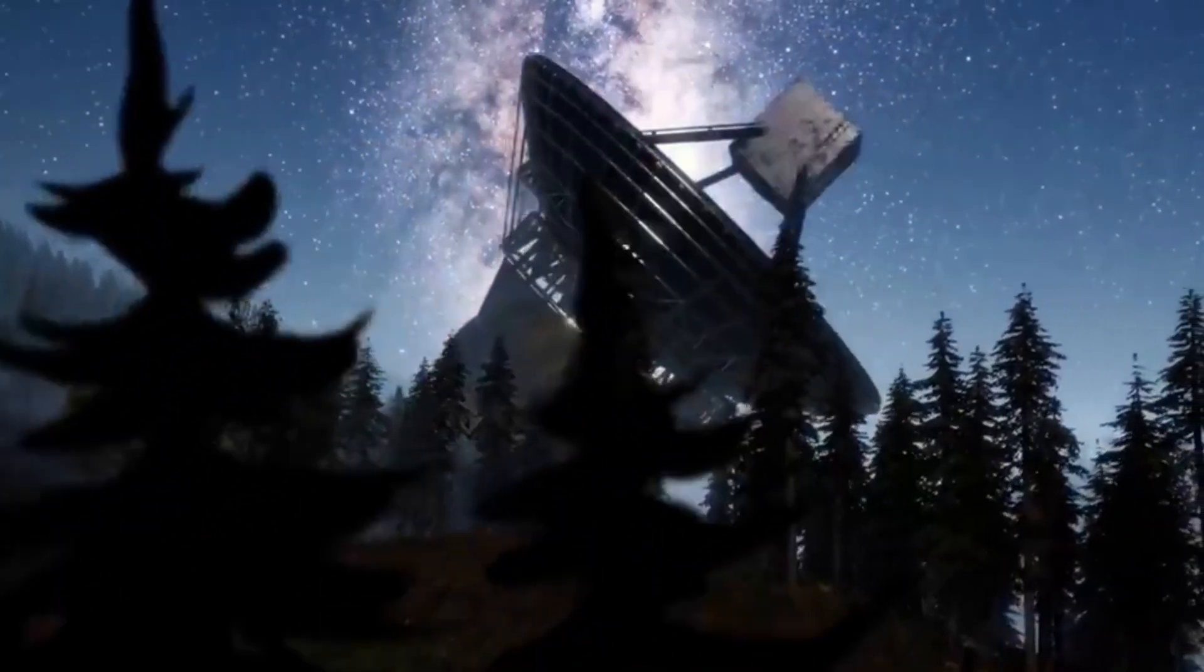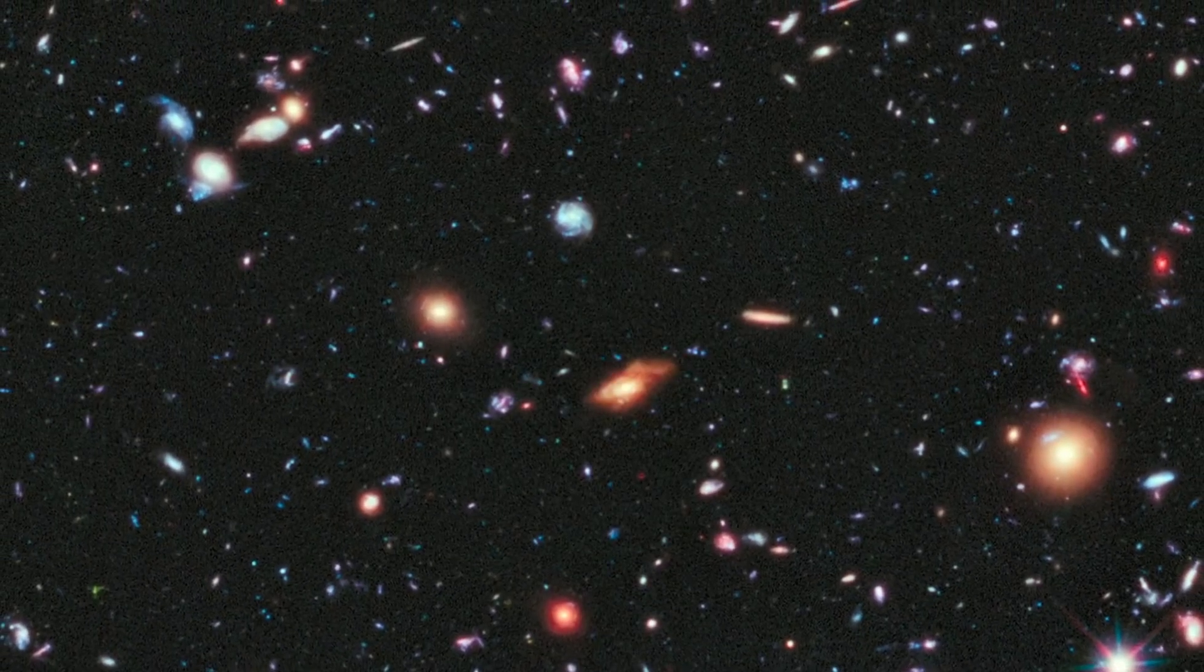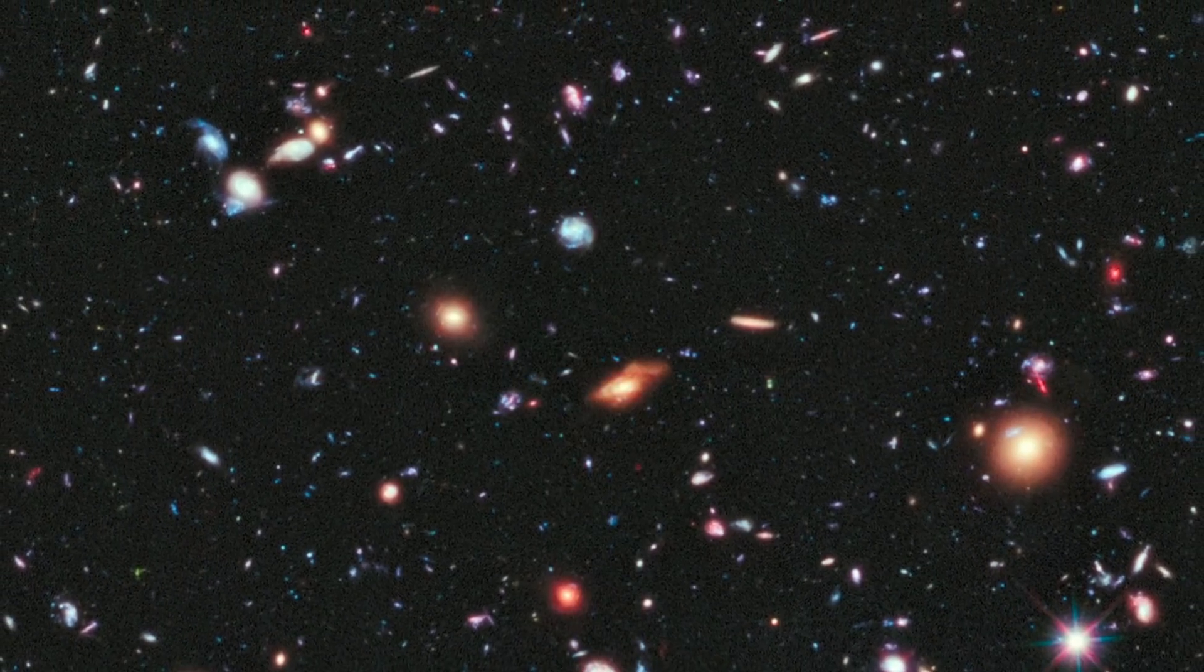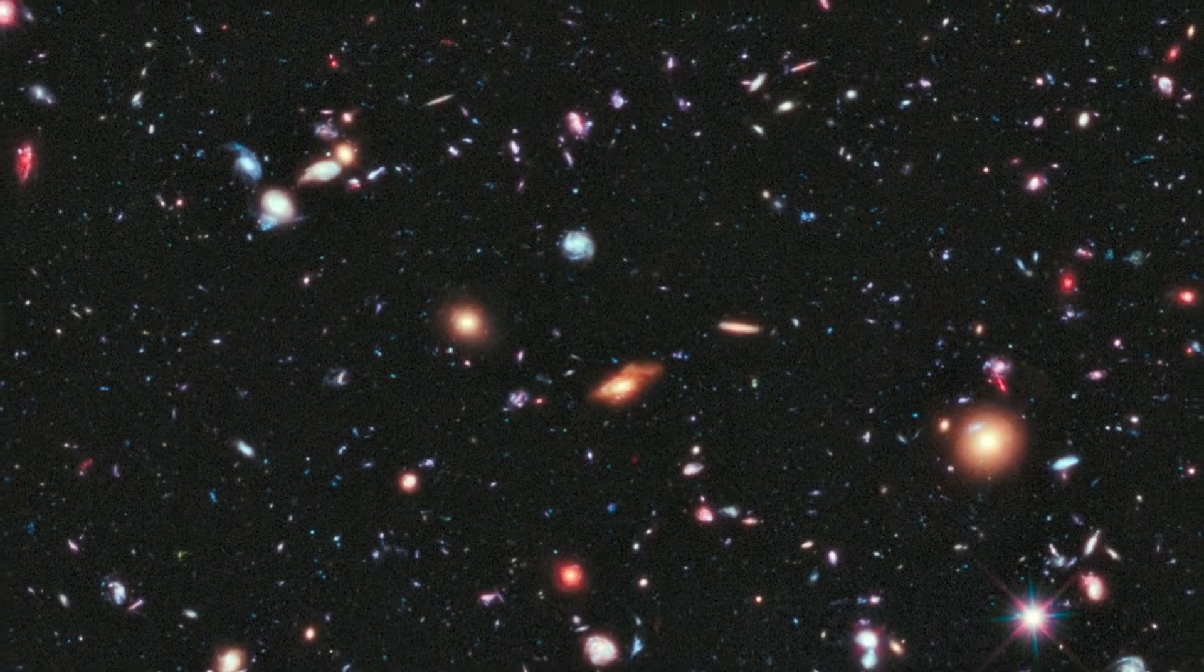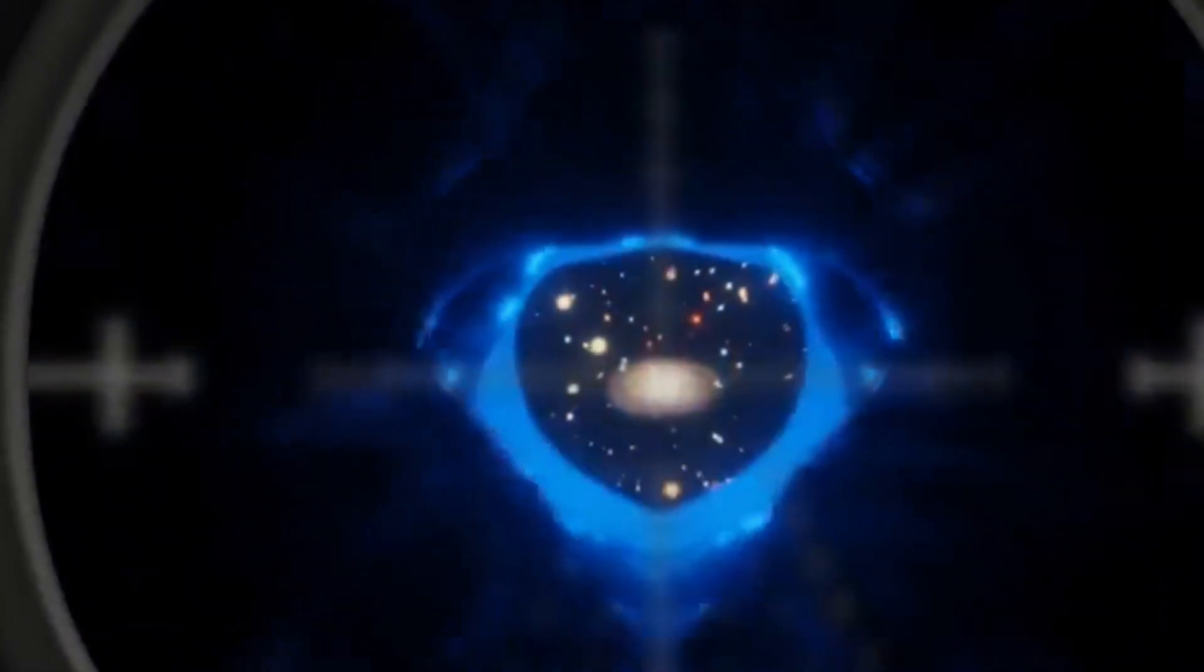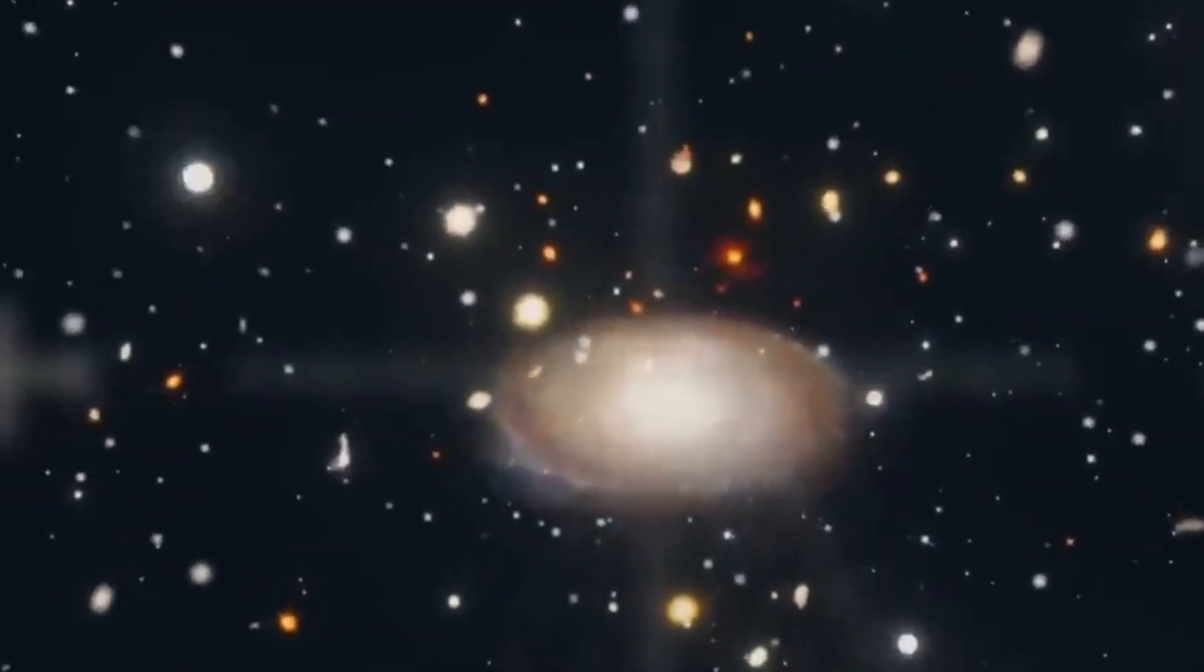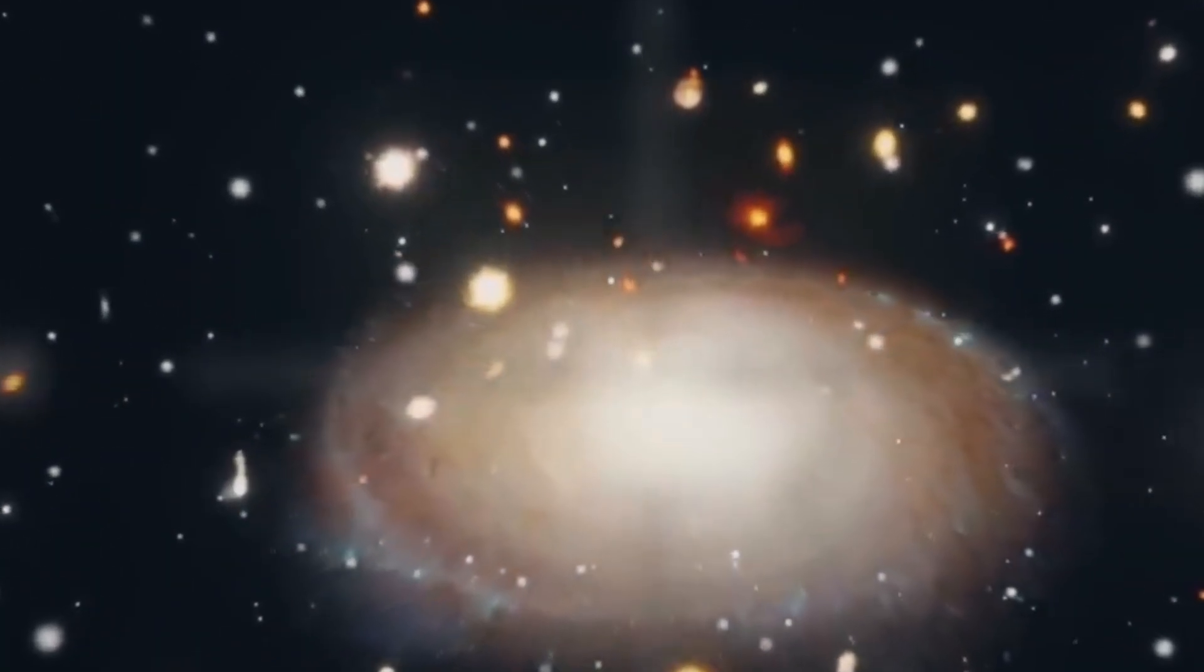When astronomers analyzed the deep field data, they noticed something even stranger. The background glow between galaxies, once thought to be residual starlight, was brighter than it should be. It wasn't coming from any known object. It appeared to come from the very fabric of space itself.